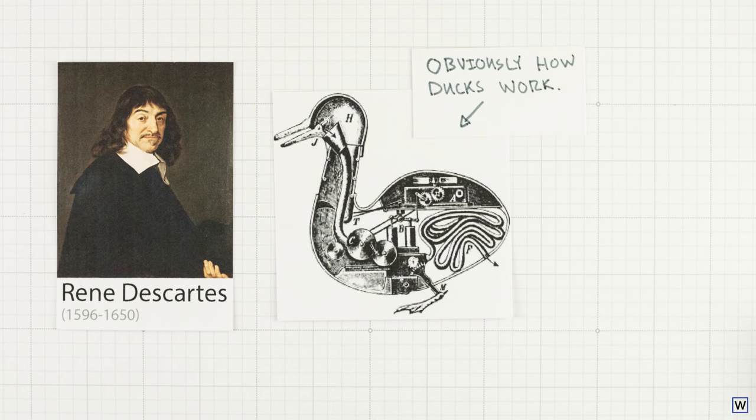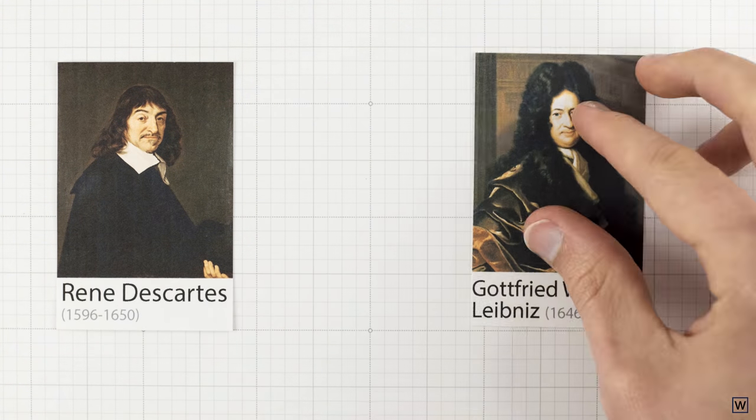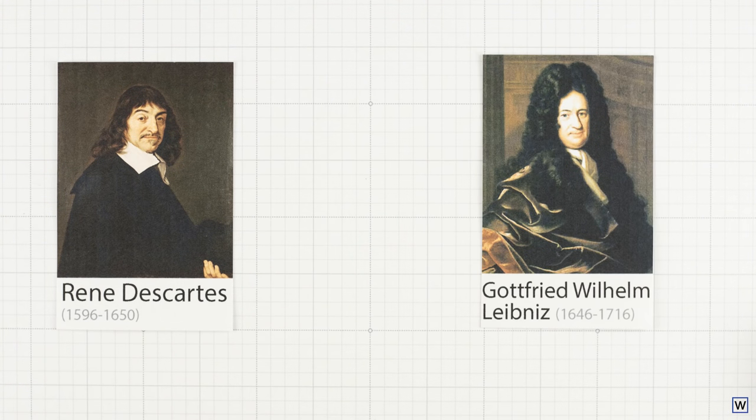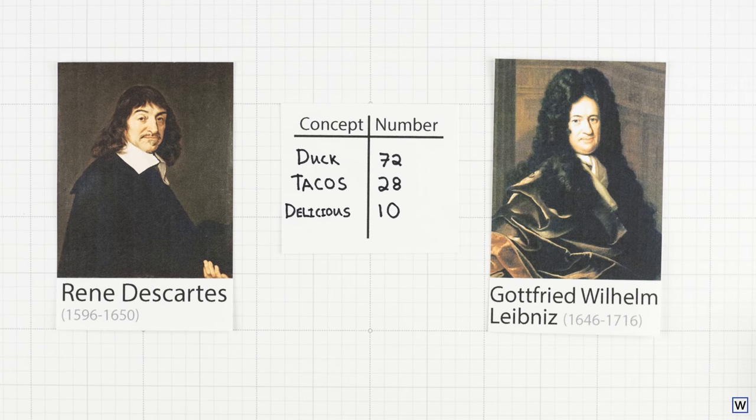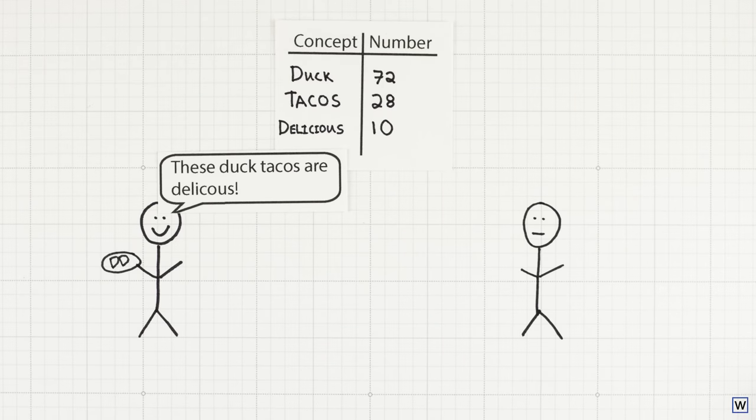Descartes gave humans a little more credit, but along with Gottfried Wilhelm Leibniz, co-father to calculus, believed that all rational thought could be systematized by assigning every concept to a number. Arguments could then be resolved by simple calculation.